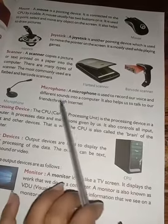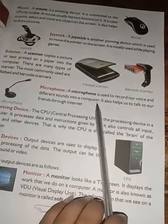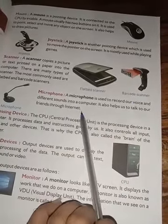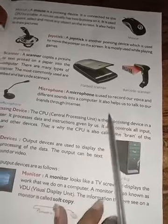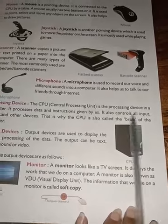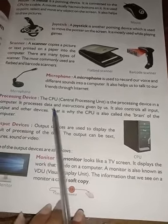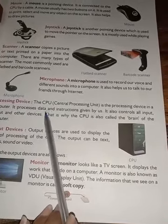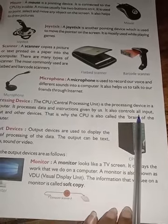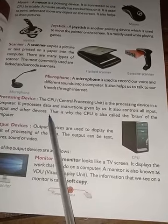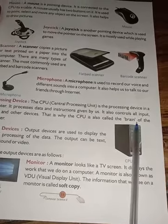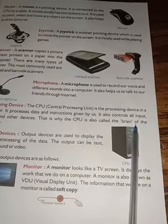Microphone kya hota hai? Yeh record karta hai hamare voice aur alag-alag sounds ko computer mein. Yeh help karta hai internet ke dwara doston se baat karne mein. Processing device kya hota hai? CPU ek processing device hota hai computer mein. Yeh process karta hai data aur instructions jo hamare dwara diya jata hai, aur control karta hai sabhi input, output aur doosre devices ko — isiliye CPU ko computer ka brain kaha jata hai.